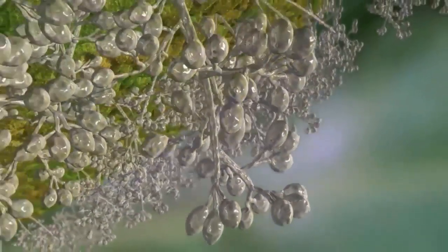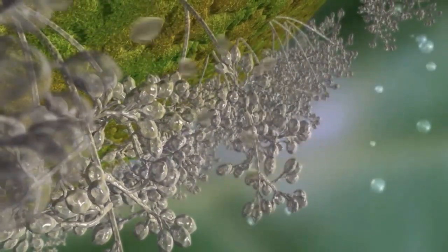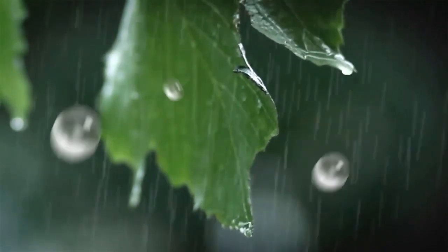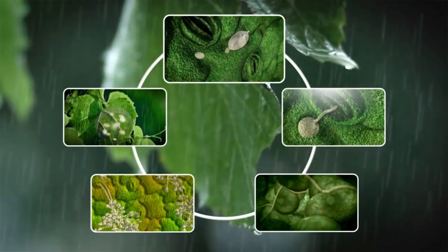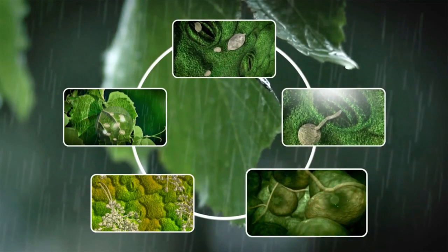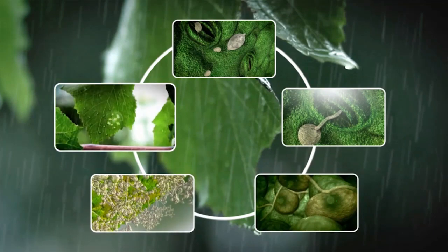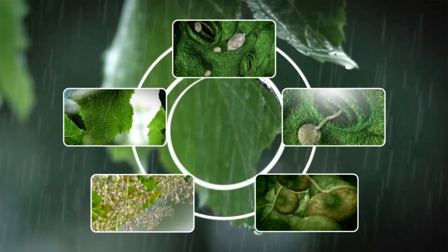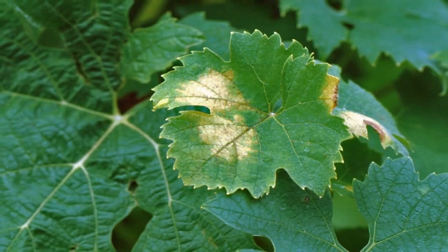These are the reproductive organs of Plasmopara viticola. Gusts of wind and above all splashes of rain spread the sporangia to other leaves, where the cycle of zoospore release, infection of the host plant, mycelium formation, mass production of sporangia, and sporangial dissemination can continue repeating.